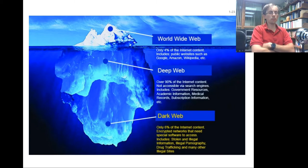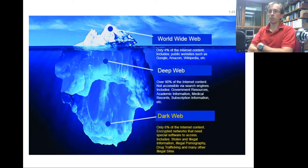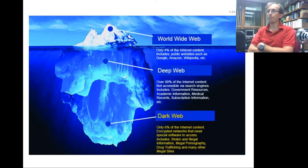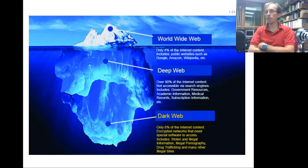The book also talks about the dark web. The surface web — everything you can find through a search engine — is about 4% of the web. About 90% is the deep web: government resources, academic information behind walled gardens, medical records, and intranet sites you need an account to access. Then there's the dark web, about 6% of internet content — encrypted networks that need special software like the Tor network to access.